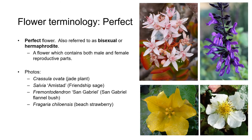Let's start with perfect flowers. A perfect flower is also referred to as being bisexual or hermaphrodite, and it is one which contains both male and female reproductive parts. In the photos on the right you can see four examples of perfect flowers: jade plant (Crassula ovata), the friendship sage, the San Gabriel flannel bush, and beach strawberry. If you look carefully you can see both the male and female reproductive structures in these photos.